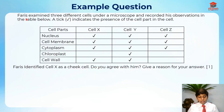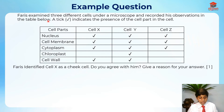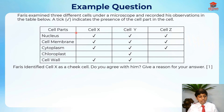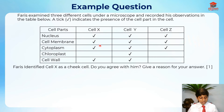Here's the question. Let's read it first. Forrest examined three different cells under a microscope and recorded his observations in the table below. A tick indicates the presence of the cell part in the cell. So this is the table with cell parts for cell X, cell Y, and cell Z.